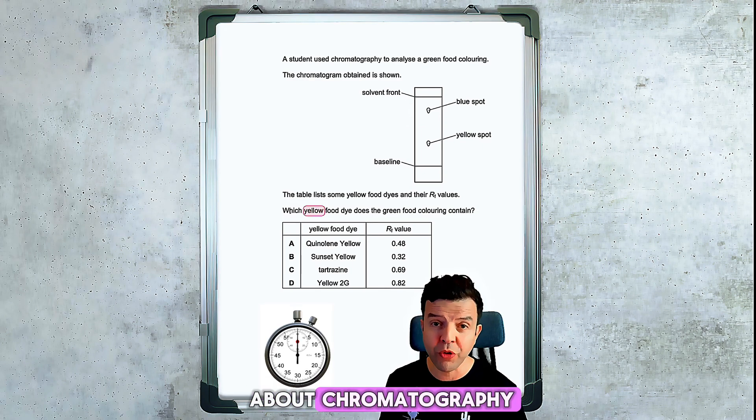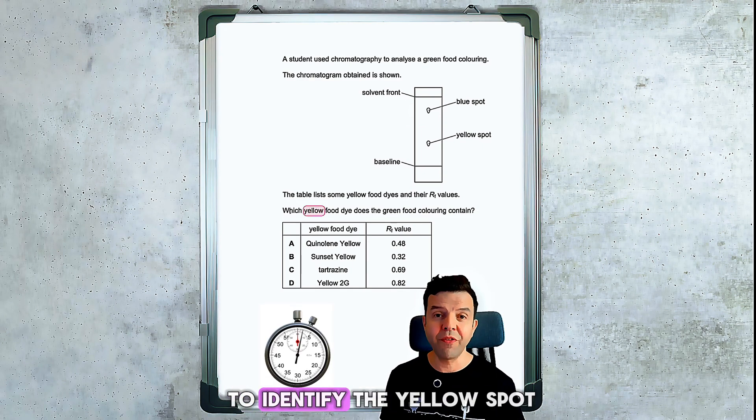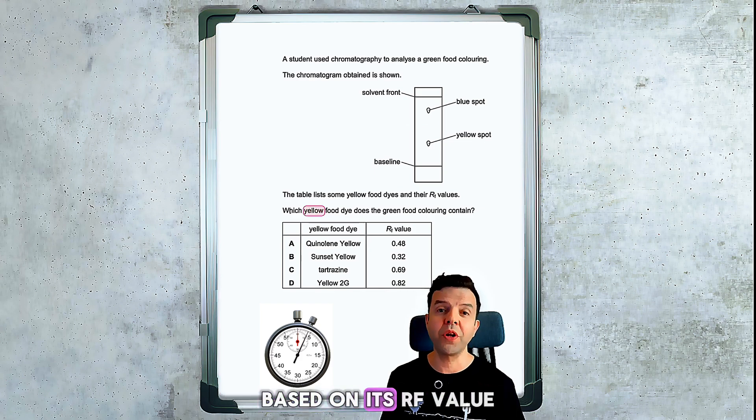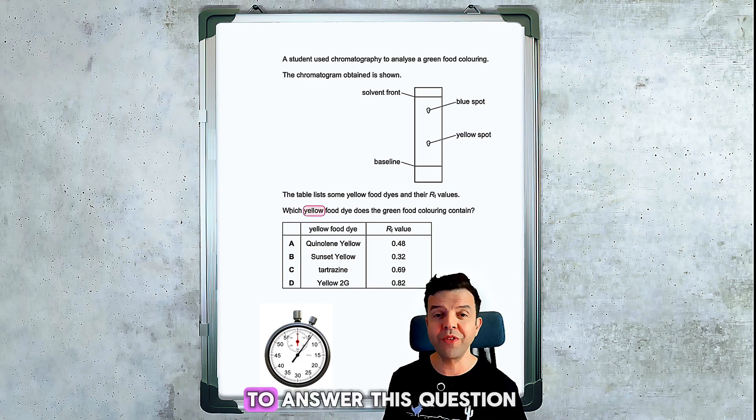The first question is about chromatography. They're asking me here to identify the yellow spot based on its RF value. You have two ways to answer this question.